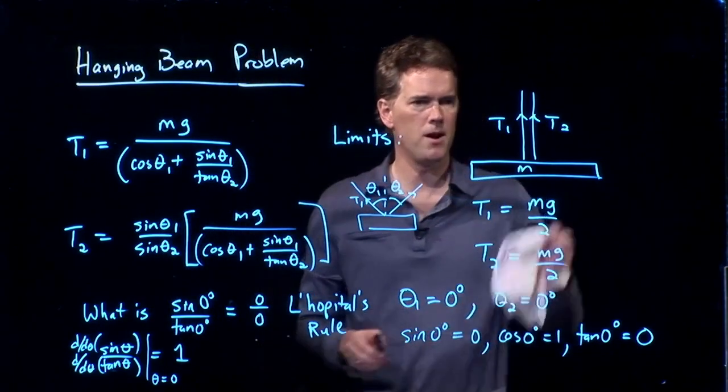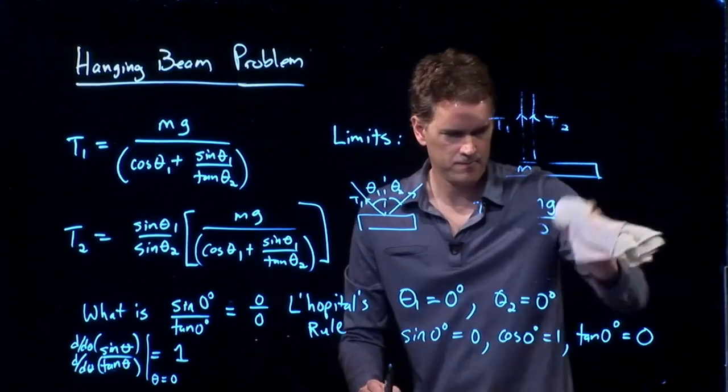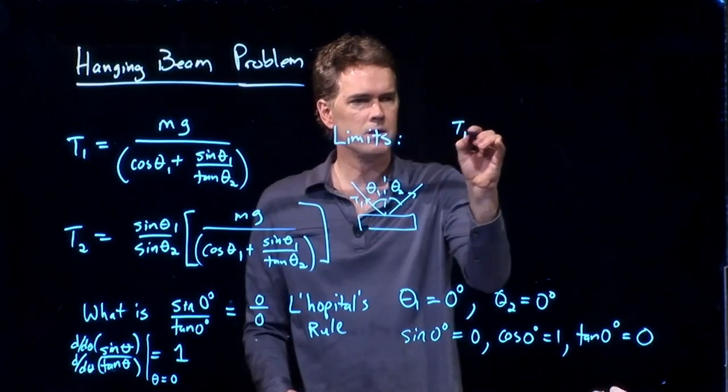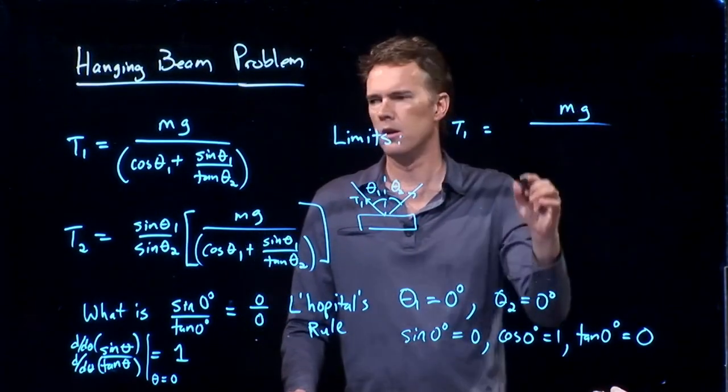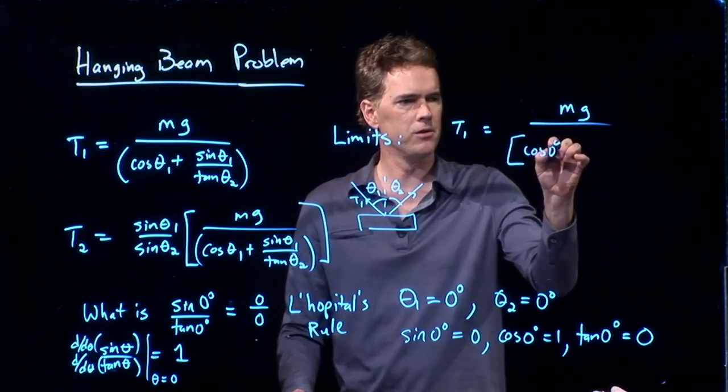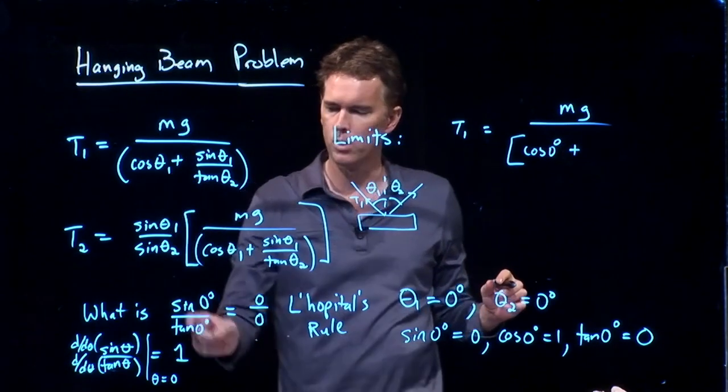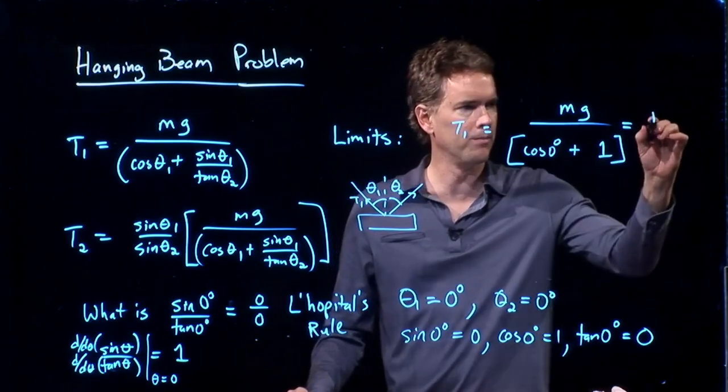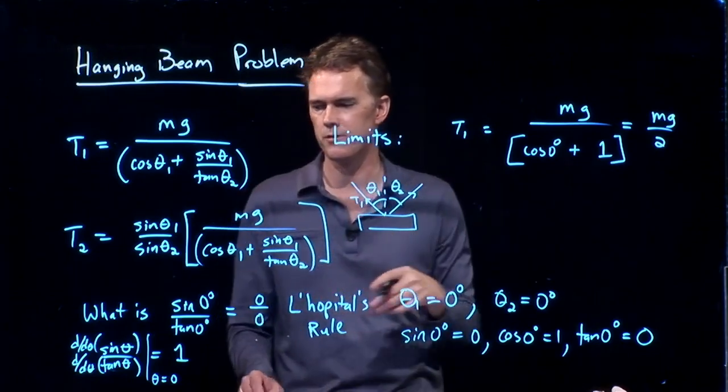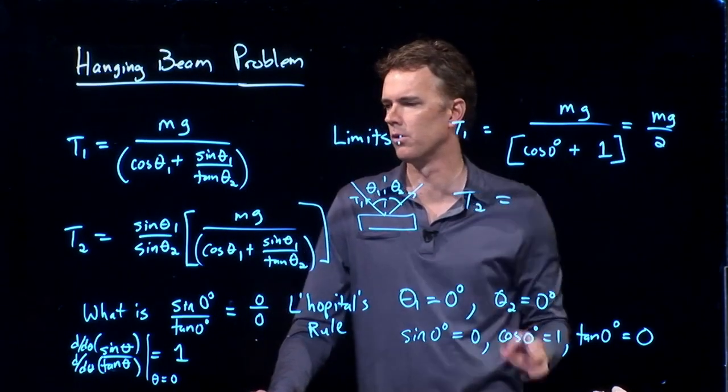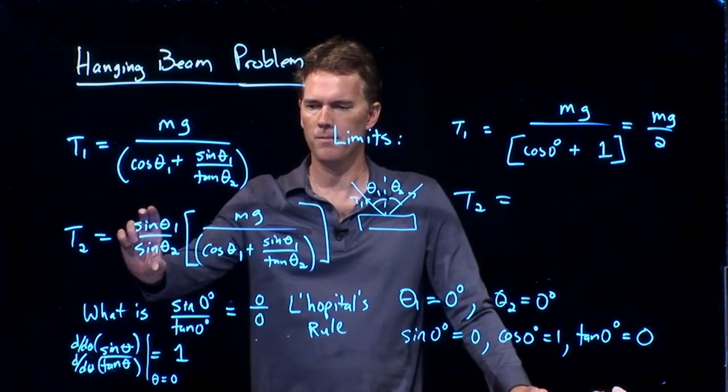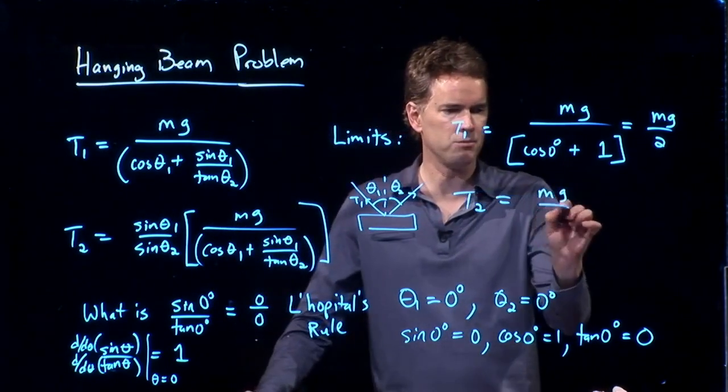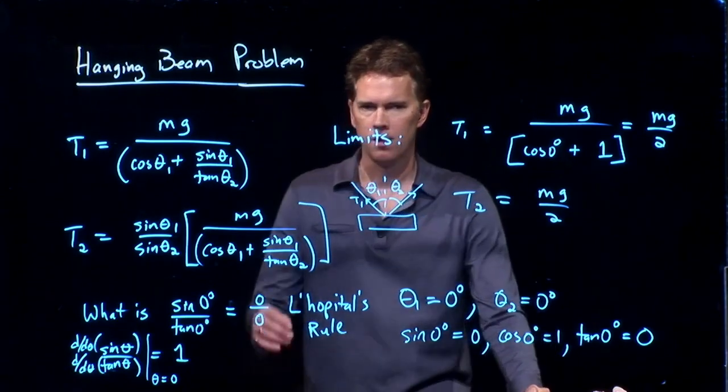And so, look what happens. T1 now becomes what? T1 equals mg over cosine of zero degrees plus this thing, which we just said becomes one. And we know that cosine of zero degrees is also one. And so, in fact, we do get mg over two. T2 equals this stuff, which becomes one. mg over something similar to what we had before. We also get mg over two. Okay? Yeah, Ian.